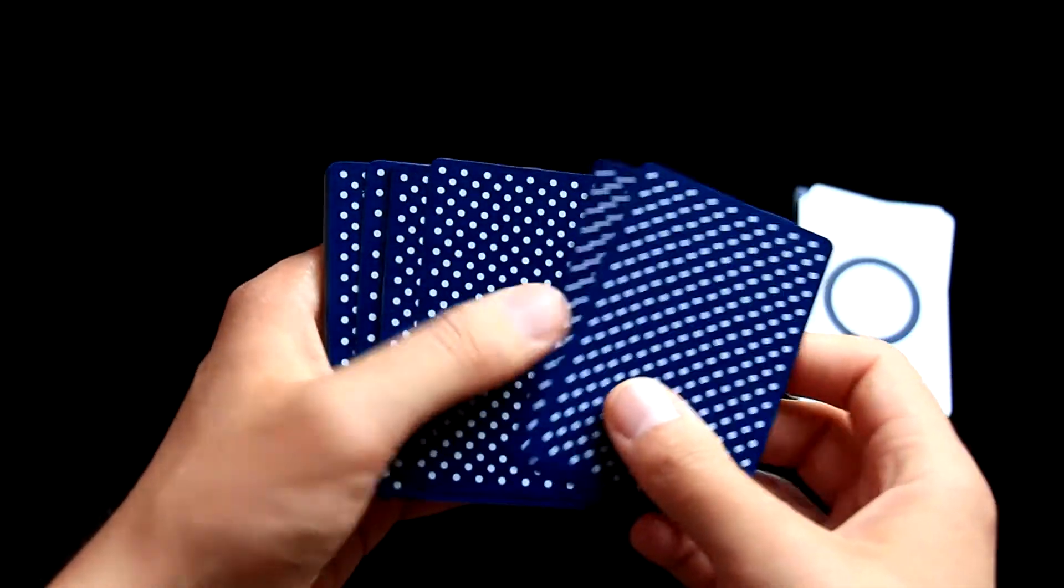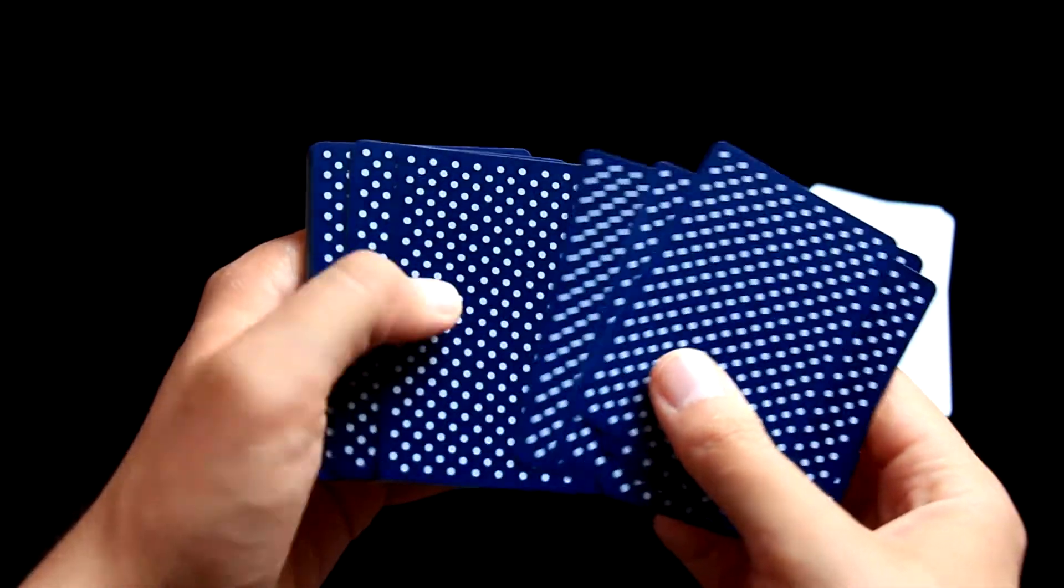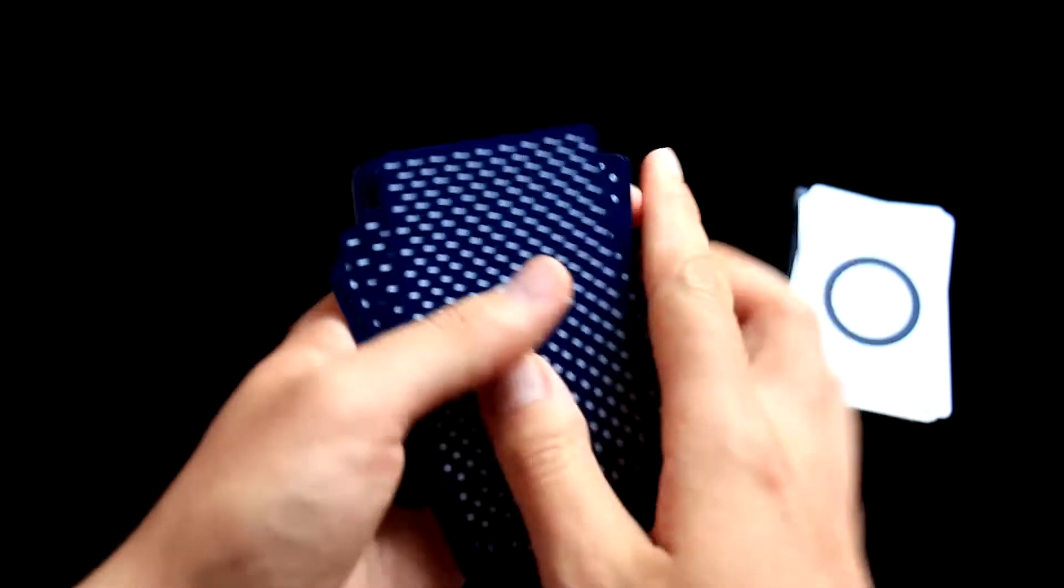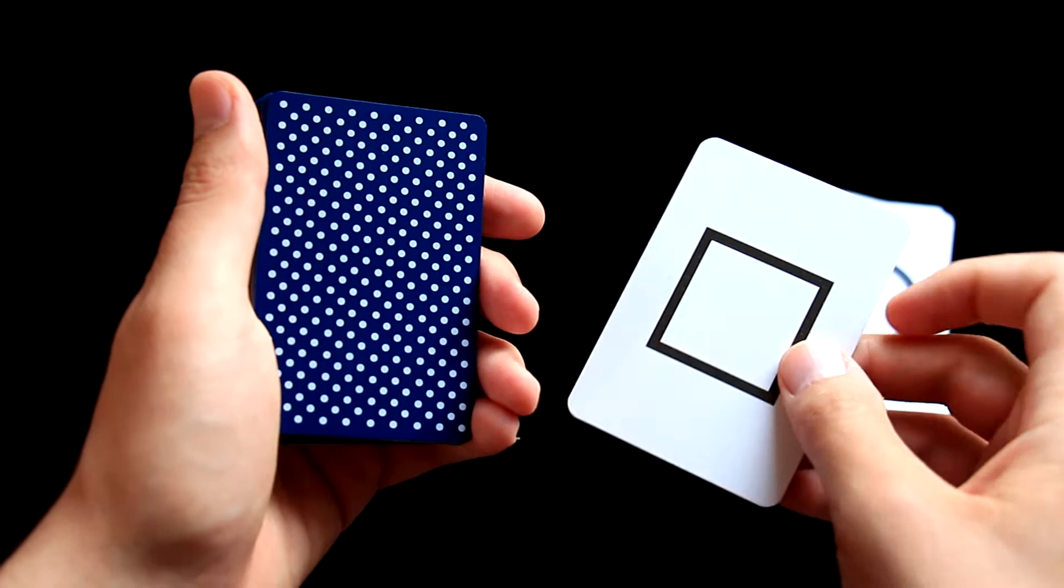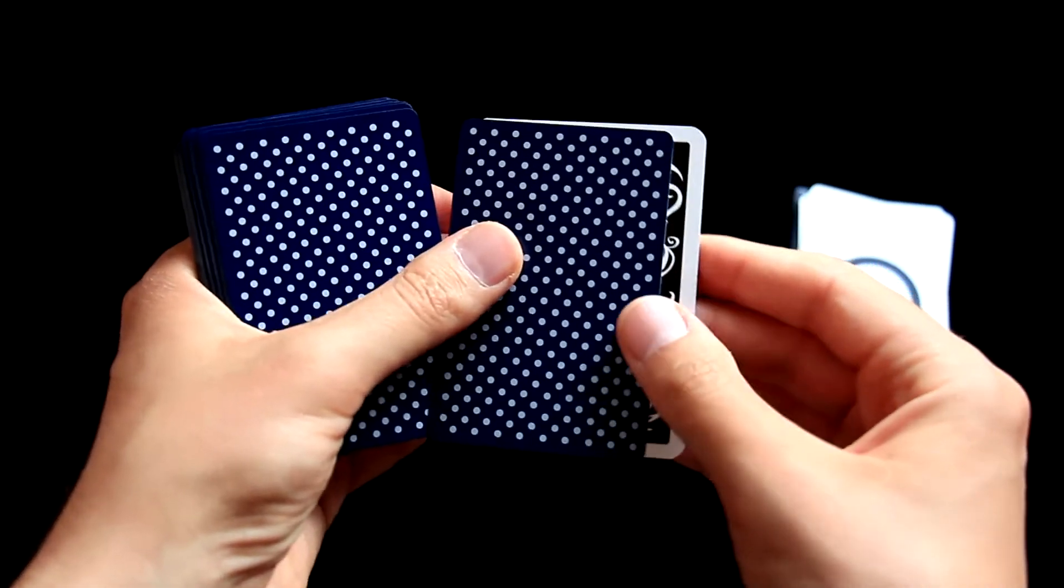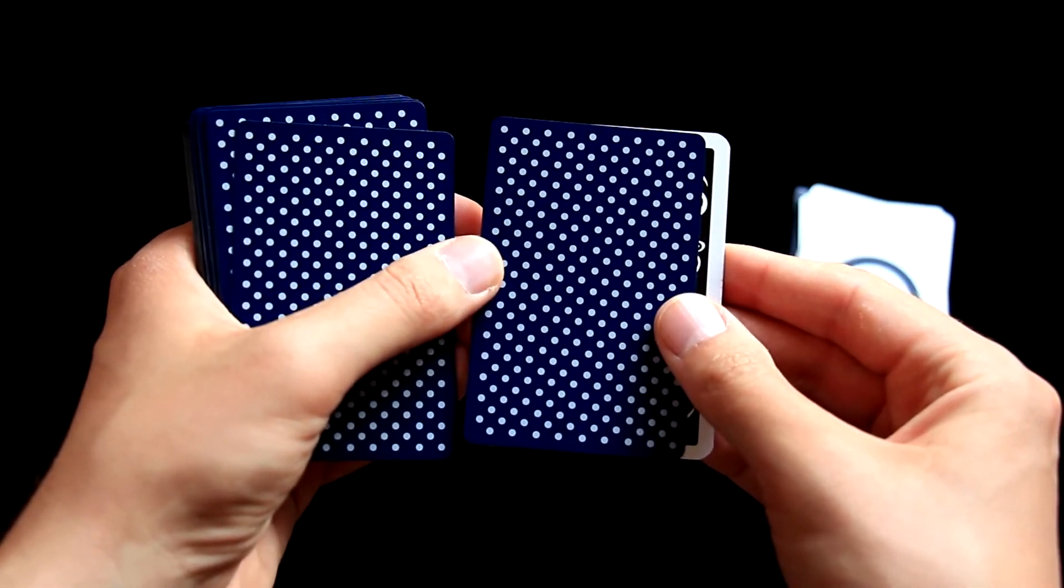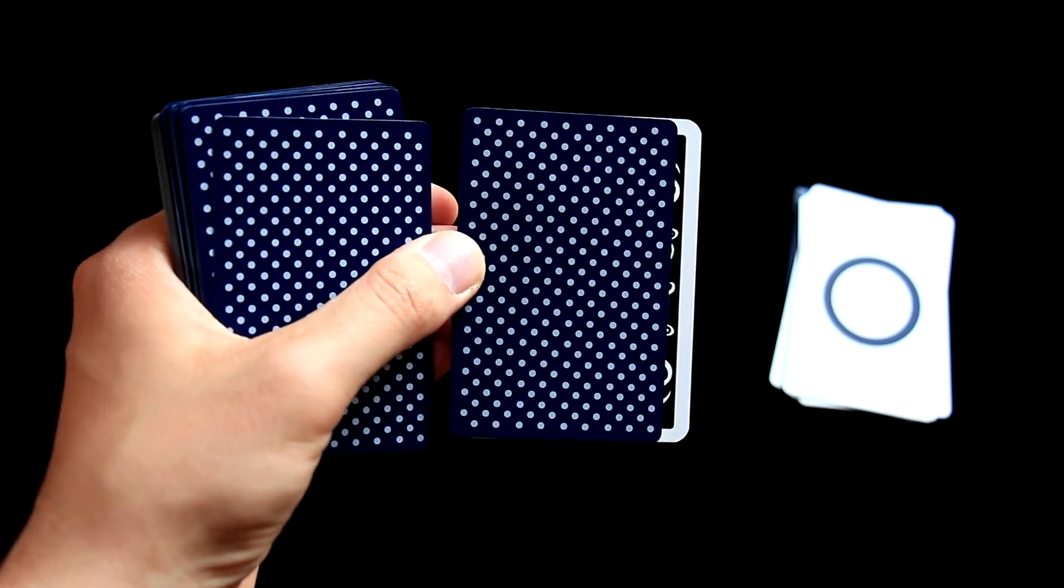These cards are bridge sized, it means they are a bit smaller than standard deck of poker size. We can compare it for example to this card, which is standard poker size, and you can see they are really a bit smaller.